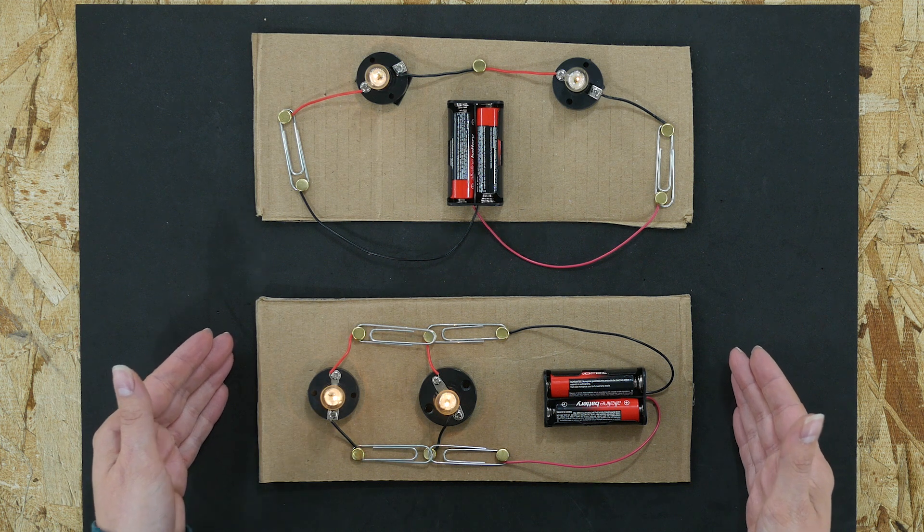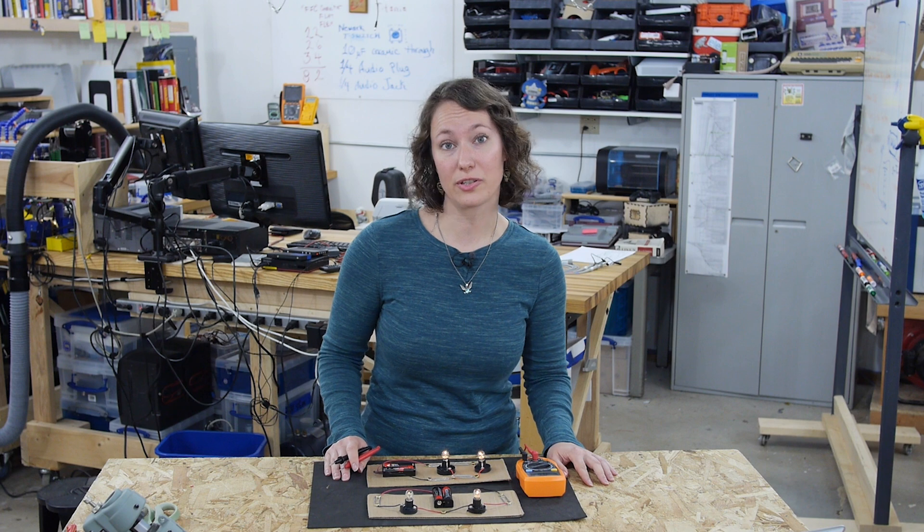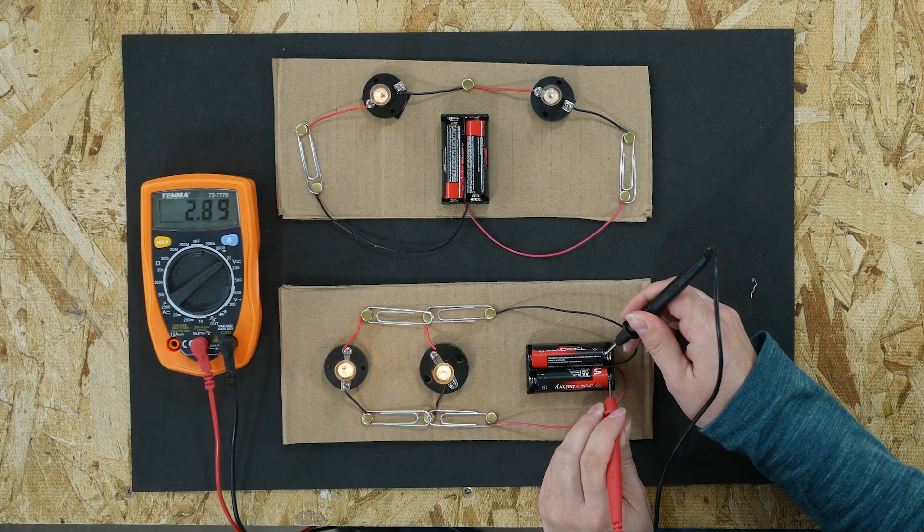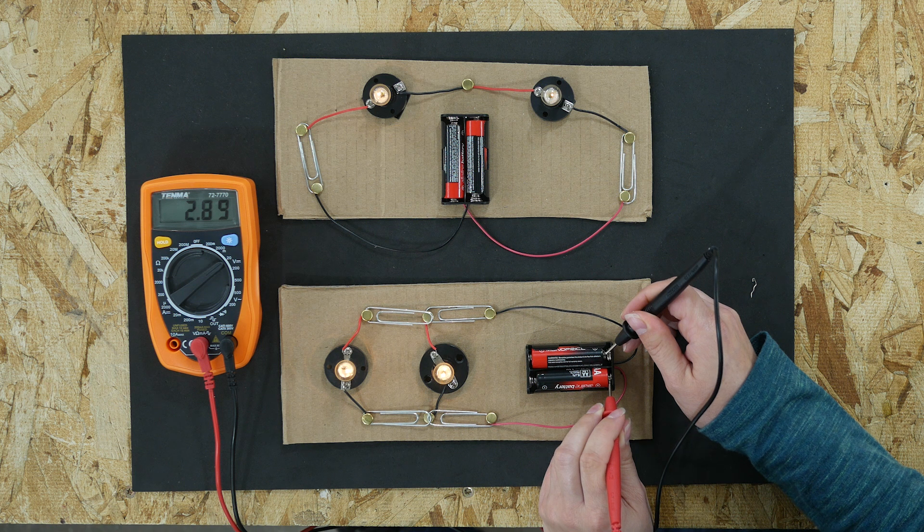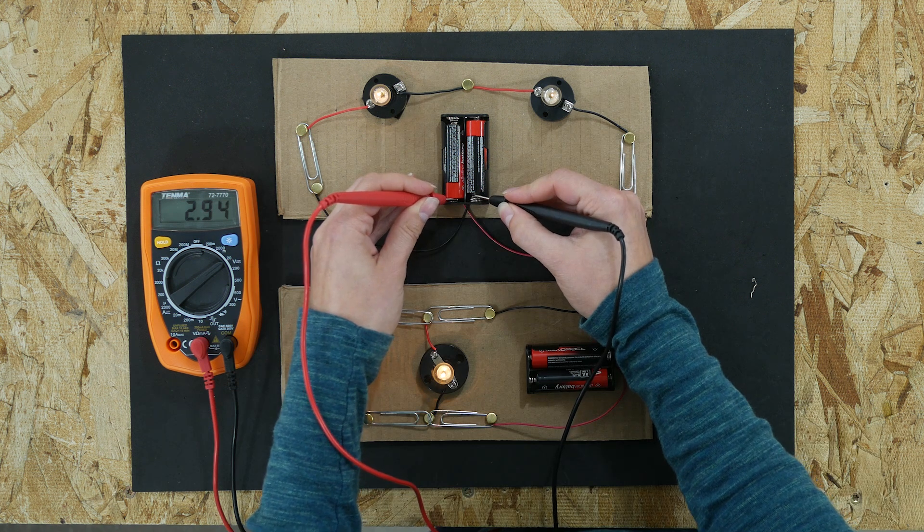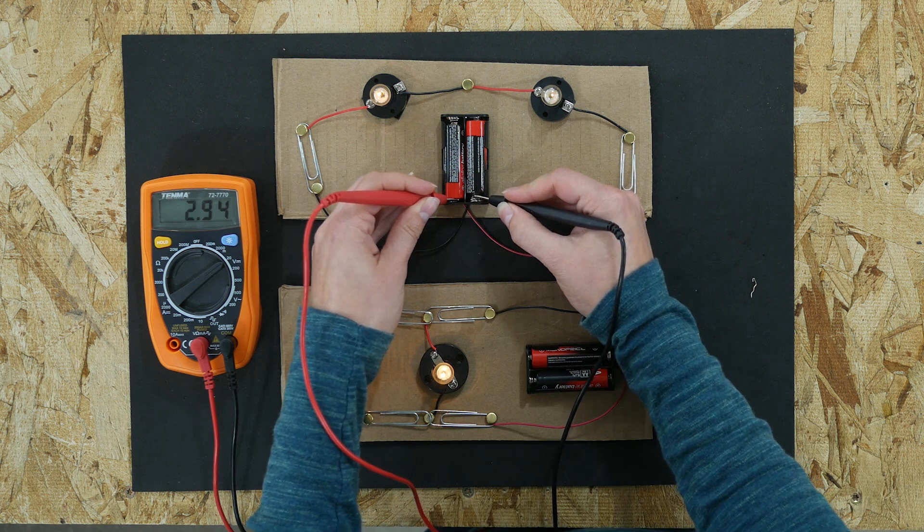Let's use our multimeter to see. We know our batteries are supplying three volts to the circuit, but let's check them anyway. These batteries currently have a combined 2.89 volts of power. These two batteries have a combined 2.94 volts of power. Almost three volts.